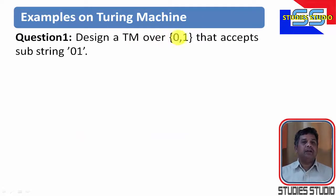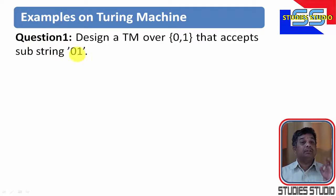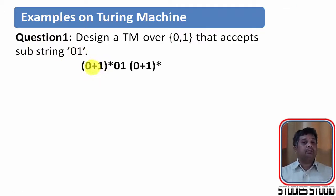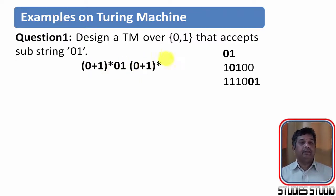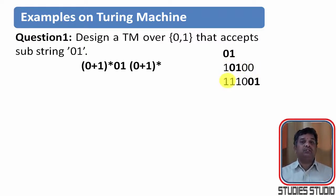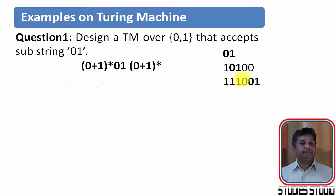Today's first example is: we are going to design a Turing machine over the input symbols 0 and 1 that accepts the substring 01. In terms of regular expression, before 0 and 1, we can have any number of 0s and 1s, and after this also, we can have any number of 0s and 1s. So the string will look like this — only 01 is accepted. For example, 1, then 01, then 00 — the substring 01 is available in this string.